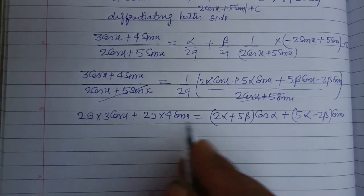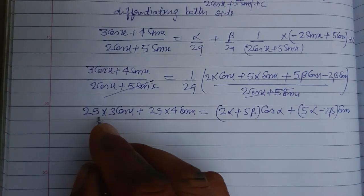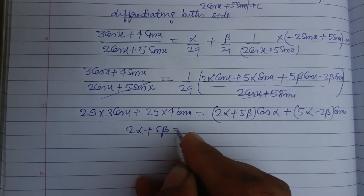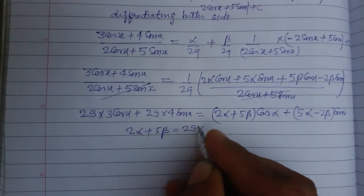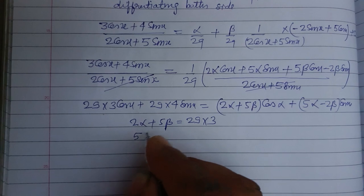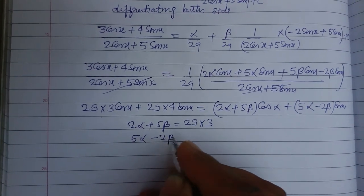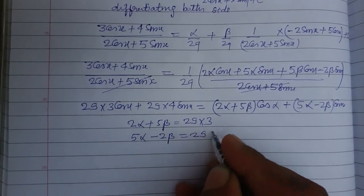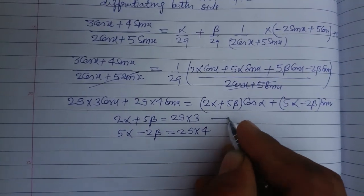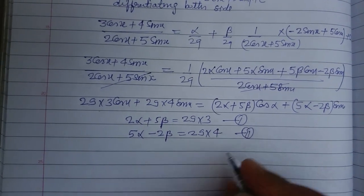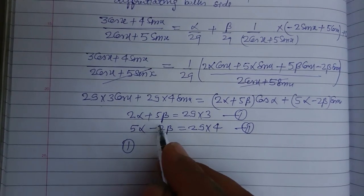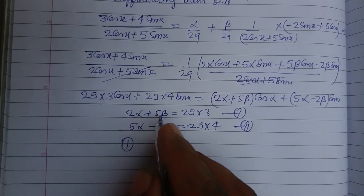Grouping terms: (2 alpha + 5 beta) cos x + (5 alpha minus 2 beta) sin x. Comparing coefficients of cos x and sin x on both sides gives us two equations: 2 alpha + 5 beta = 29 times 3, which is our first equation, and 5 alpha minus 2 beta = 29 times 4, which is our second equation.